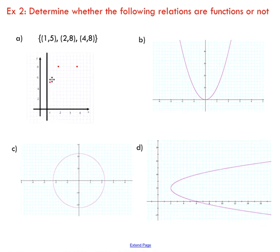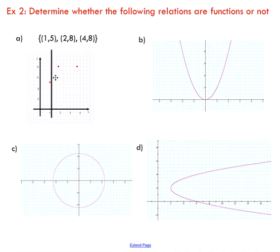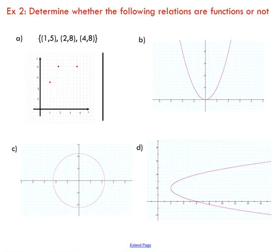You can see here this one checks out — there's never a spot where there is more than one point on that vertical line. So we're going to conclude this one is, in fact, a function.